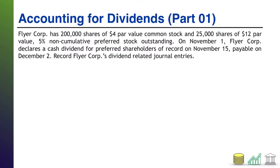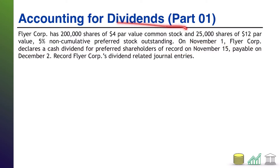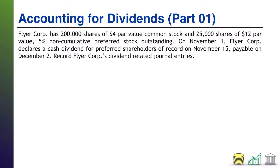All right, welcome back. Note here that on November 1st, FlyerCore declares a cash dividend for preferred shareholders of record as of November 15th. Therefore, all of the information about the common stock we can simply ignore. We're instead going to focus on the preferred shareholders. And since this is non-cumulative preferred stock, all we need to worry about is how much they are entitled to in any given year — we don't need to worry about any back pay from prior years that might have been missed.